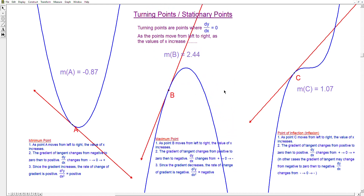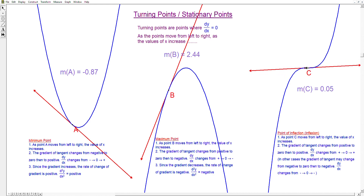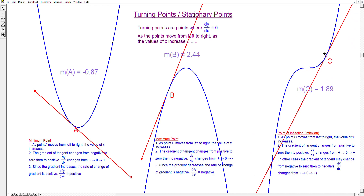Let us look at graph C. C is a point on this graph. If you look at the gradient of the tangent at point C, as C moves from left to right, the gradient is positive, it approaches zero, finally becomes zero, and then becomes positive again.